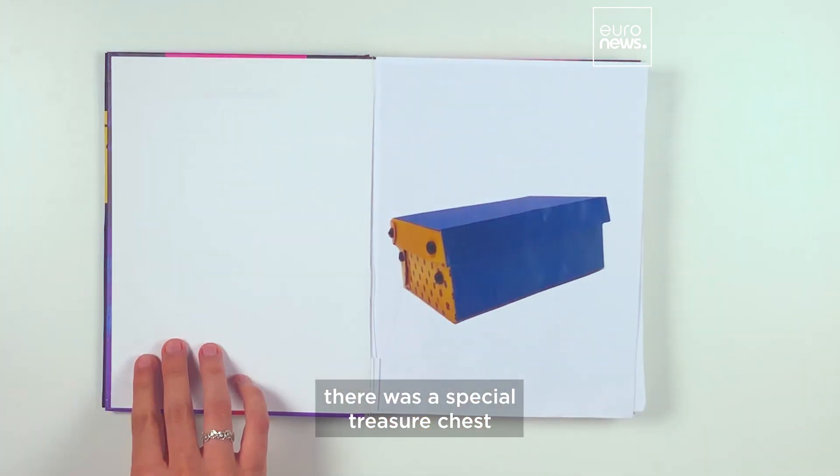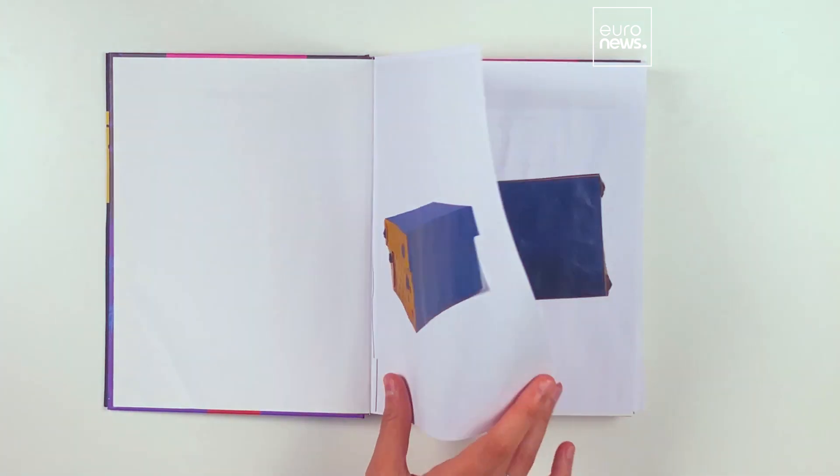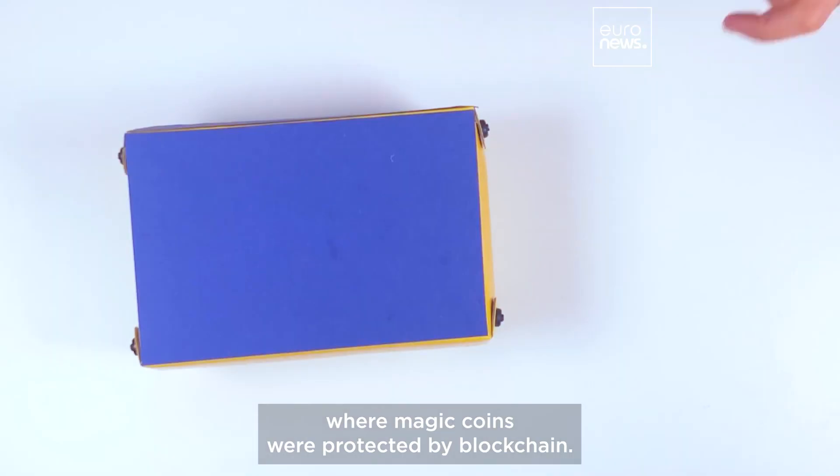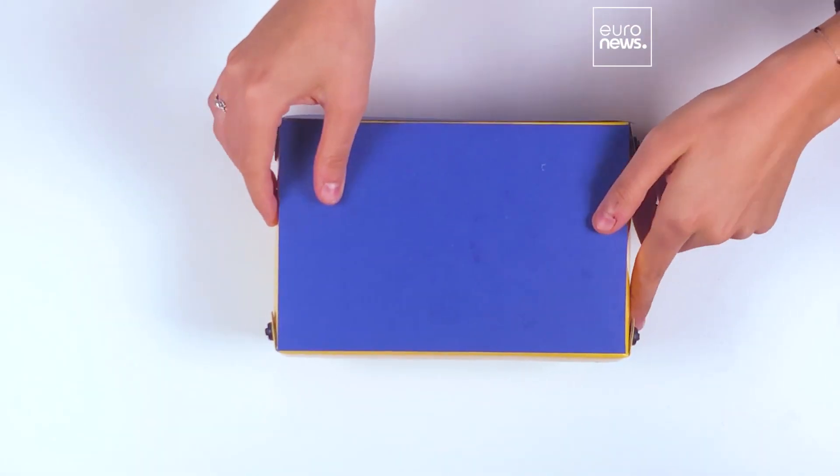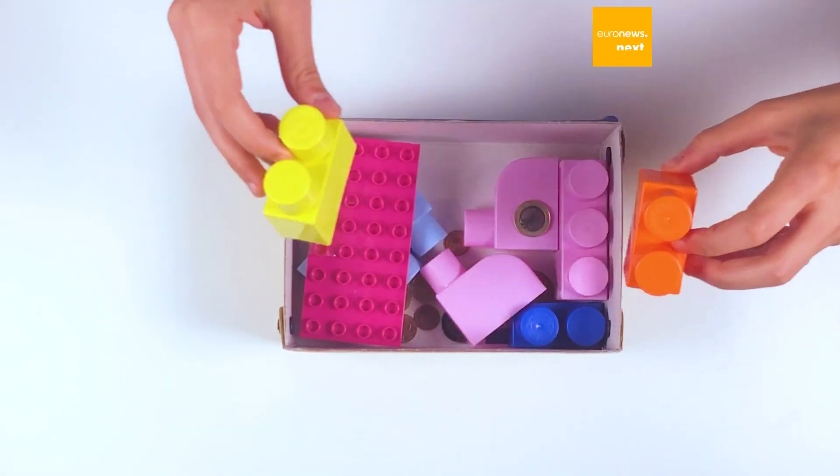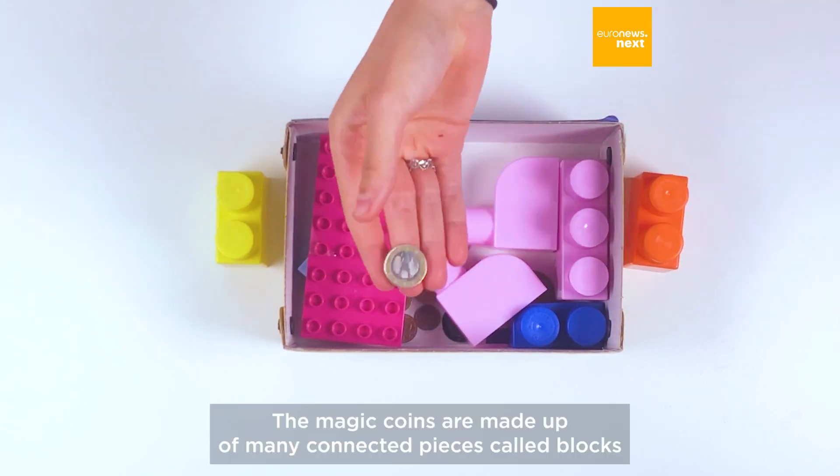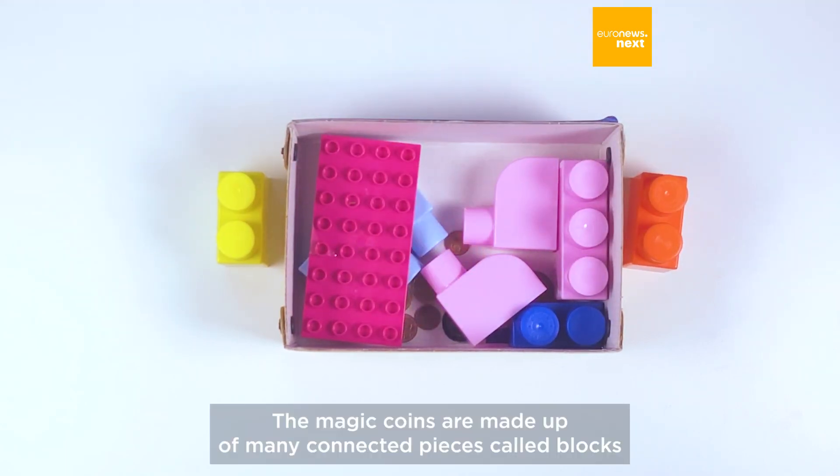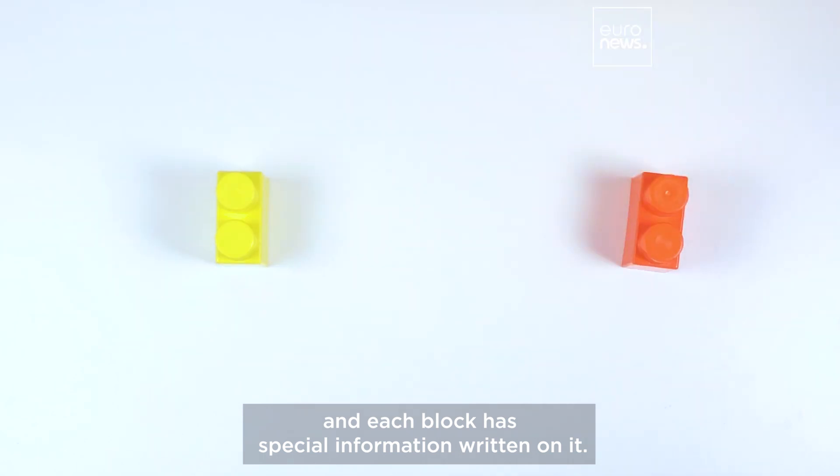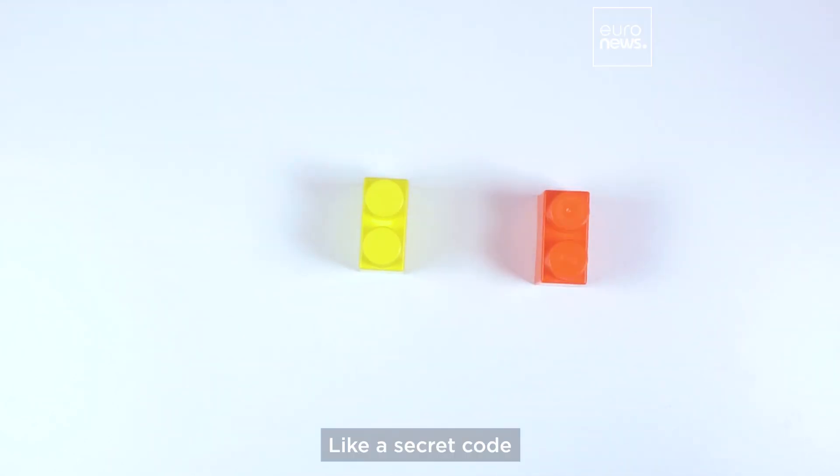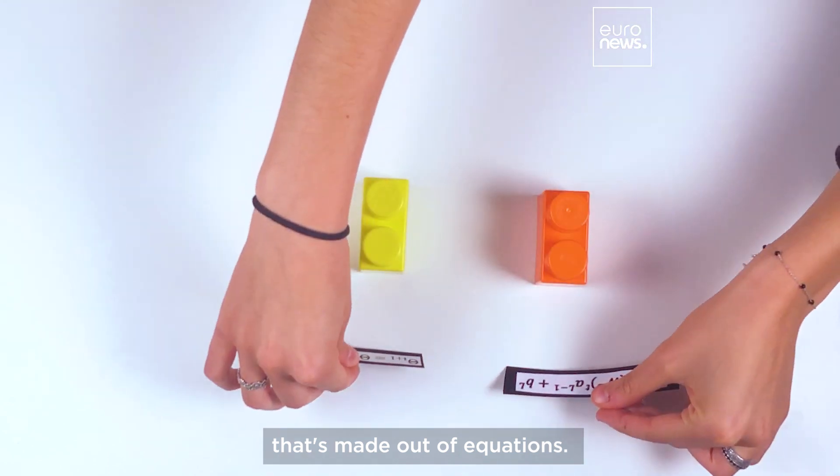Once upon a time there was a special treasure chest where magic coins were protected by blockchain. The magic coins are made up of many connected pieces called blocks, and each block has special information written on it like a secret code that's made out of equations.